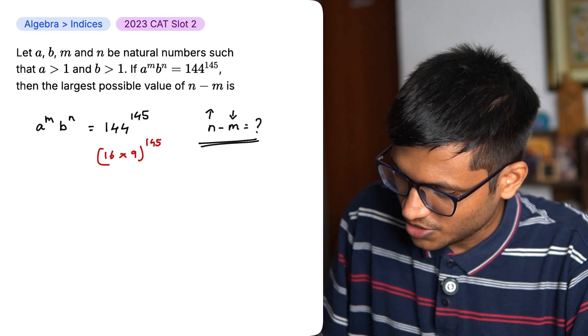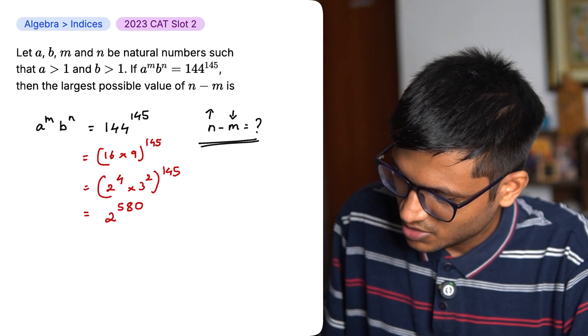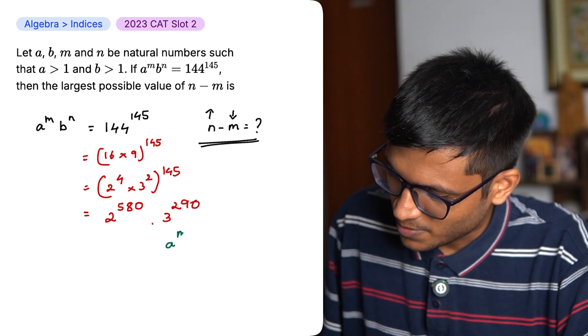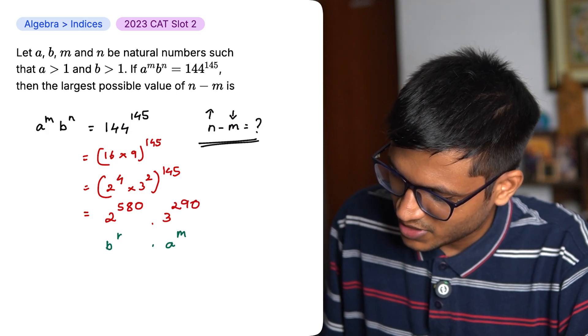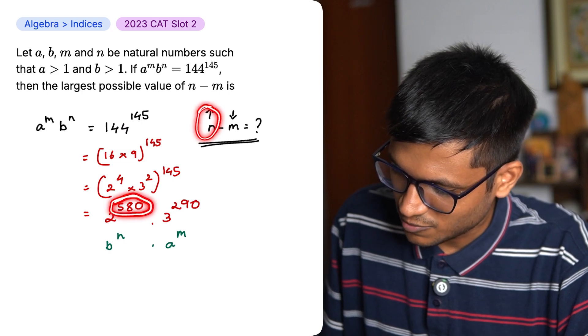144 can be written as 16 into 9. Let's simplify this. We have 2 to the power 580 into 3 to the power 290. So this can be in the form of a to the power m into b to the power n. I did this because we know n has to be the greatest and 580 here is the greatest.